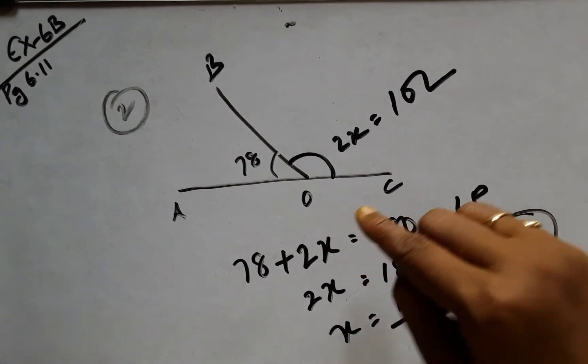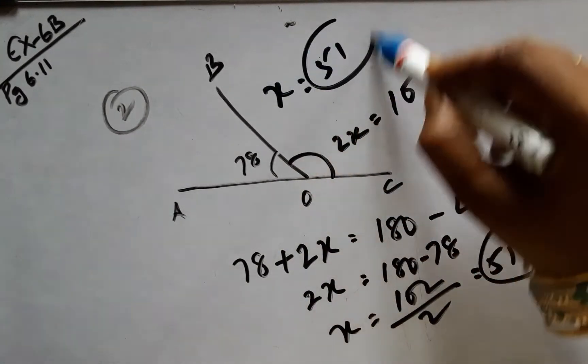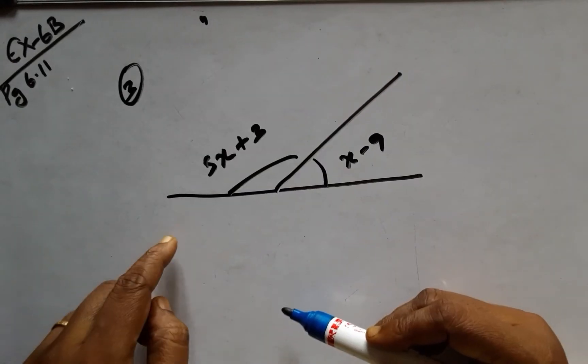But here the question has been asked to find simply x, and we have to give the answer as 51 and not this.